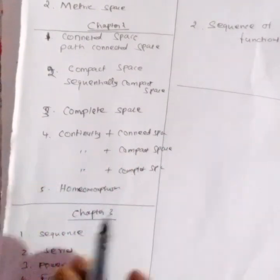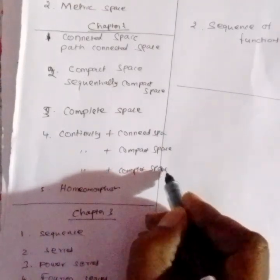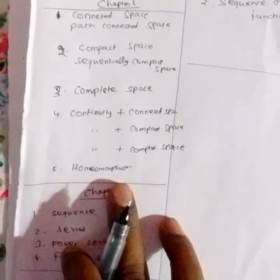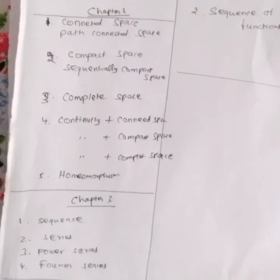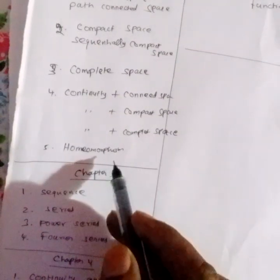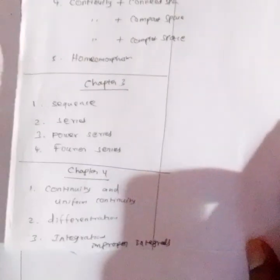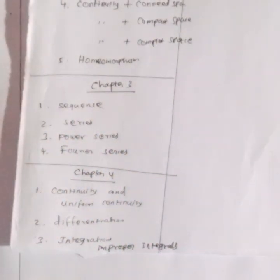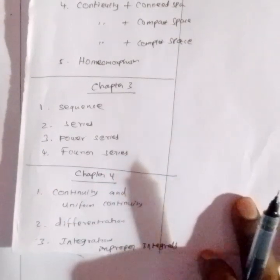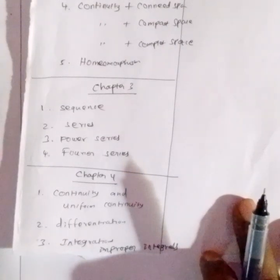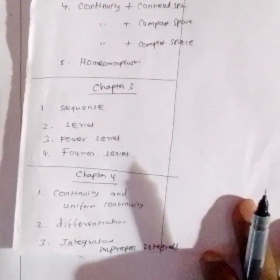Compact space to complete space — this is all about homeomorphism. We will try to create isomorphism and define it. In chapter 2 and chapter 3: sequence, convergence sequence.